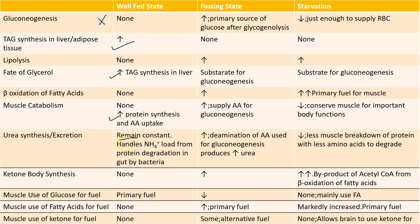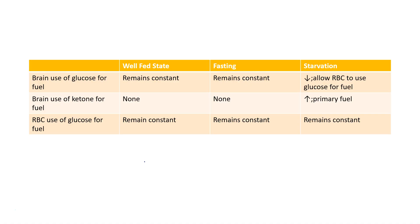The liver will handle ammonia load from the protein degradation in the gut by bacteria. There is no ketone body synthesis. The primary fuel used for the organs is glucose. The muscle uses glucose as primary fuel. The brain's use of glucose remains constant. RBC uses glucose only — irrespective of whether it is well-fed state, fasting state, or starvation, the RBC will always use a constant amount of glucose.